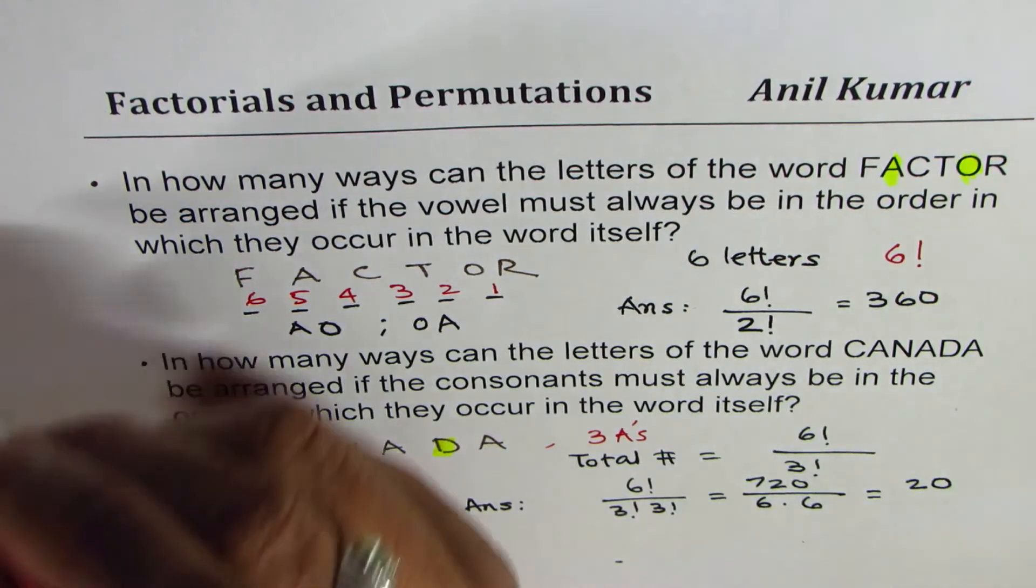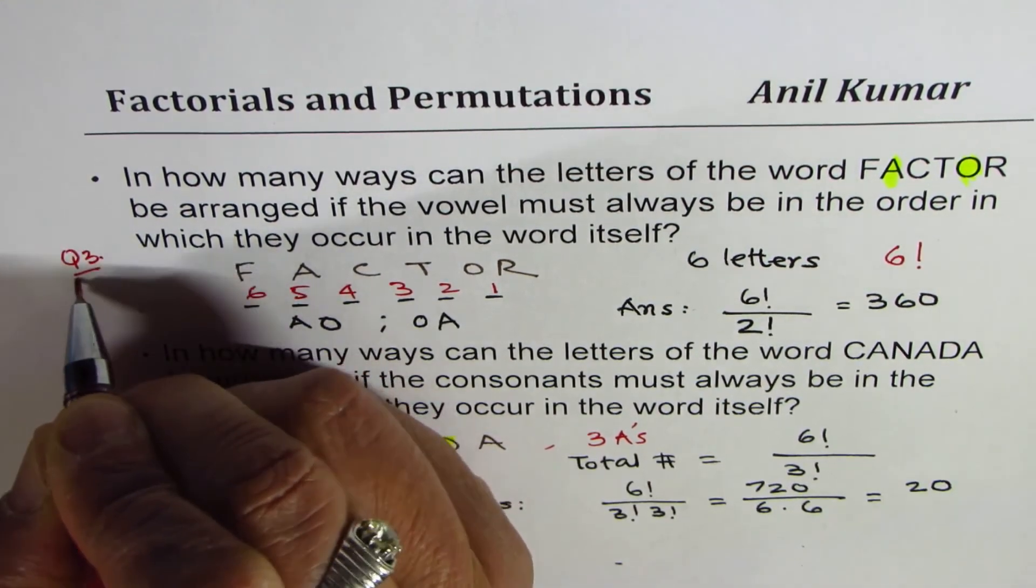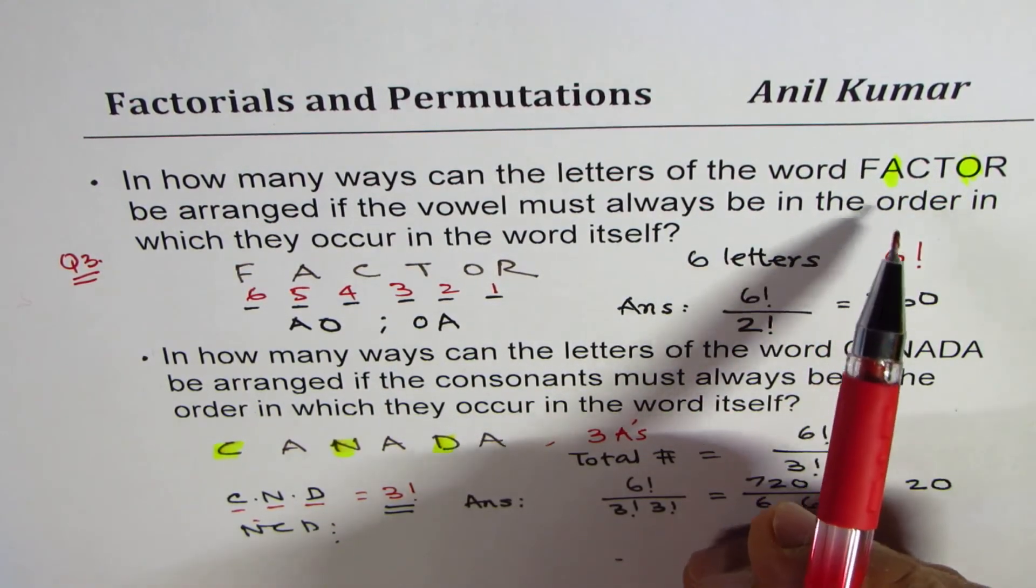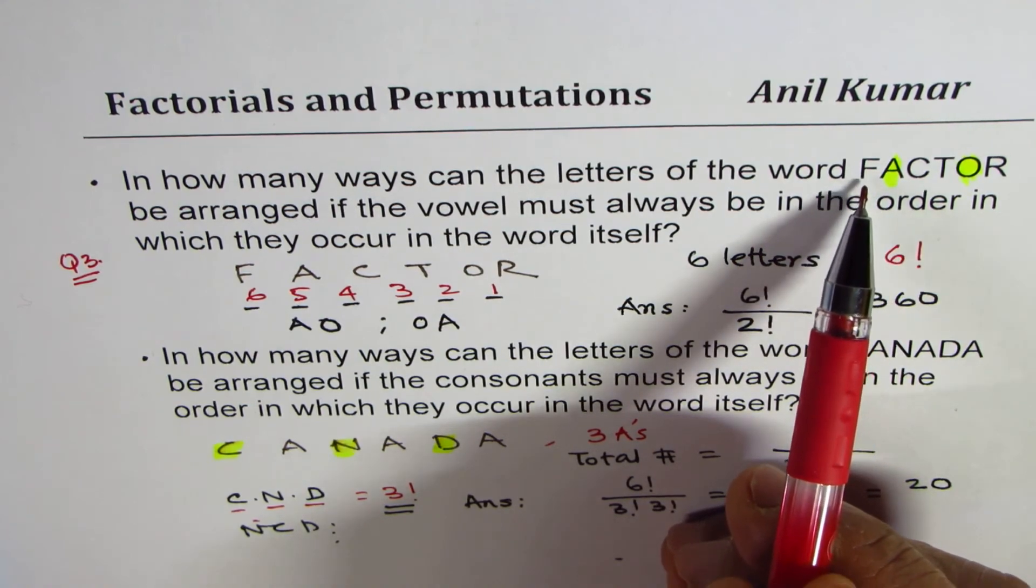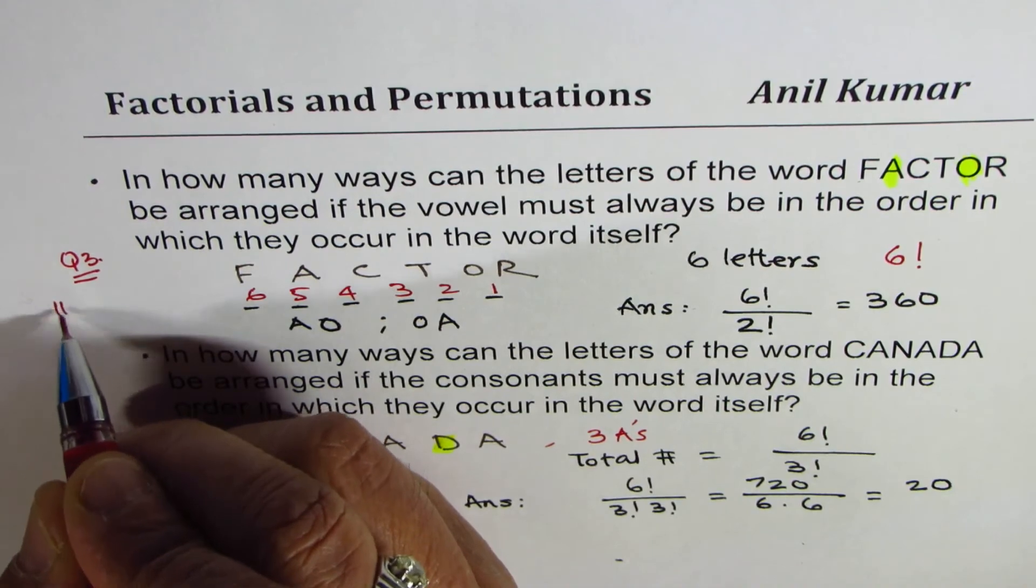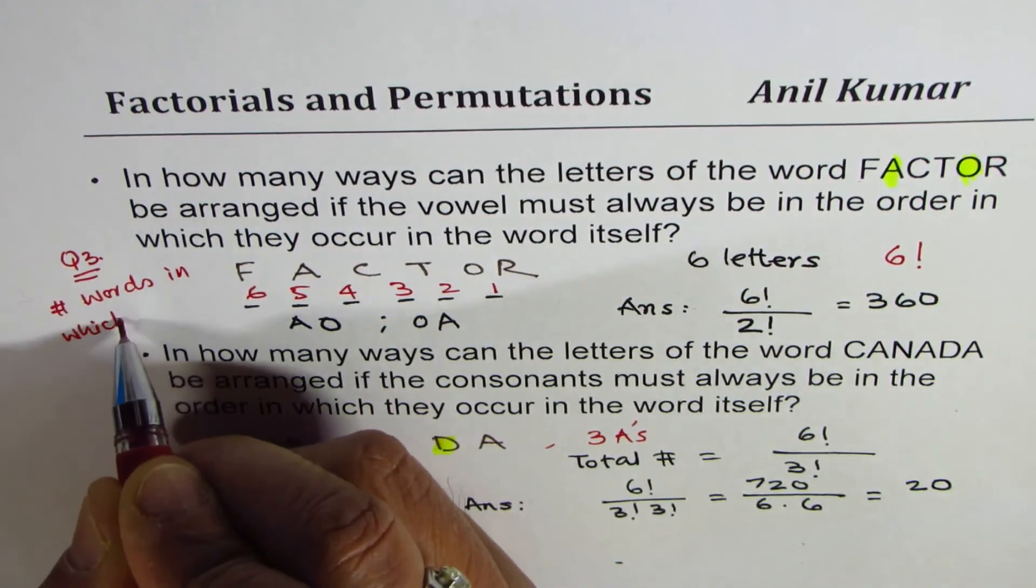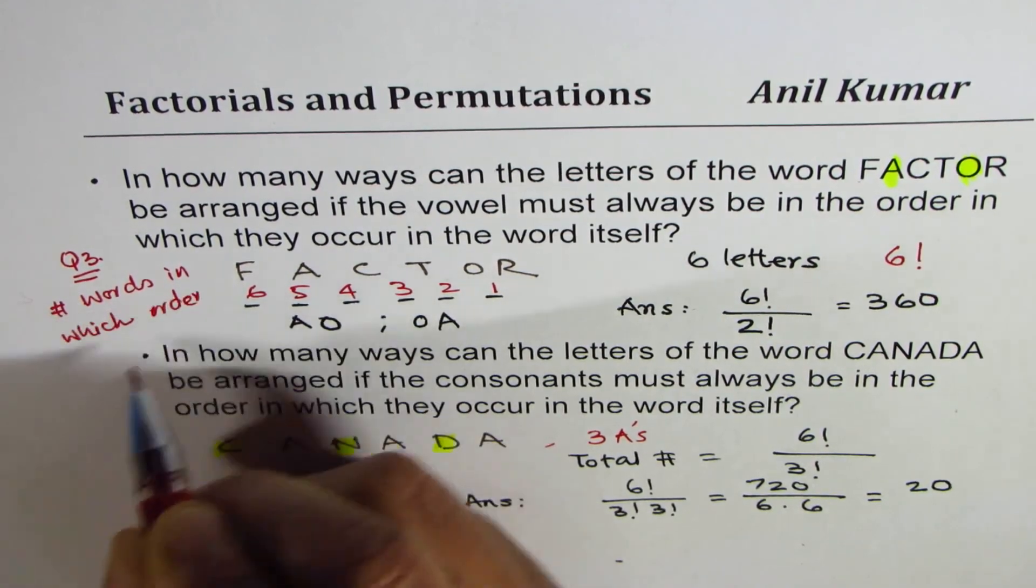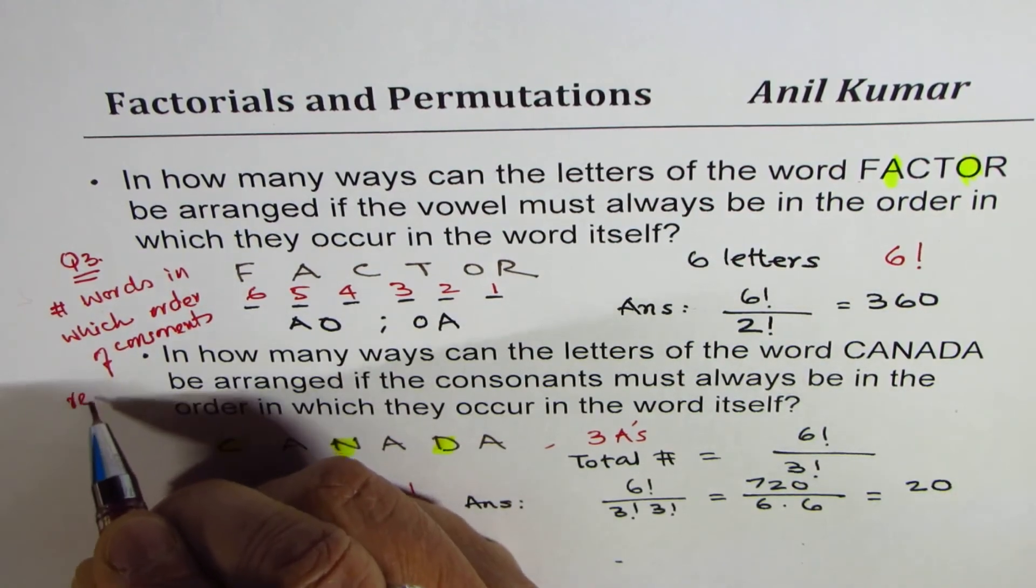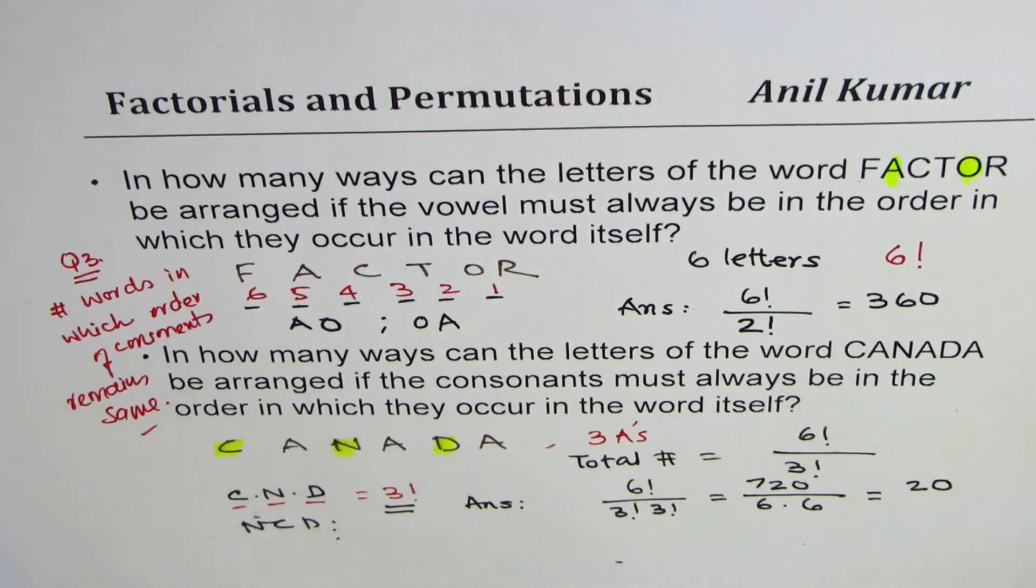Now the question for you is, here's question 3 for you. In this first question, factor, I want you to maintain the order for the consonants. So number of words in which order of consonants remains same. So that is the question for you.